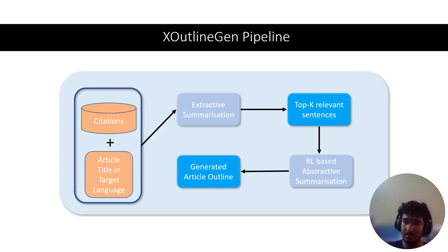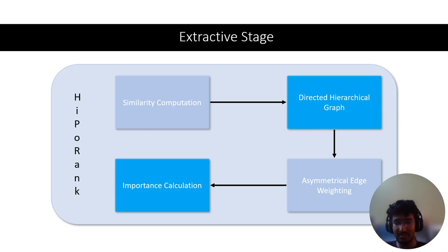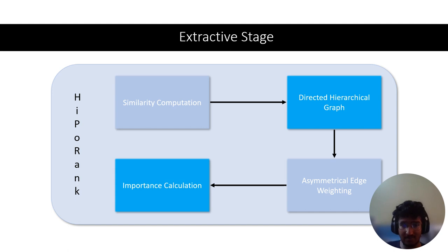We select the top key relevant sentences as extractive summarization and pass them to an abstractive summarization model with RL rewards. For the extractive stage, we use HippoRank, a neural unsupervised extractive summarization model. It creates a hierarchical graph with sentence-level nodes and section-level nodes. Sentence-level representations come from a standard encoder, and section-level representations are mean poolings of sentence-level representations. Connections between nodes are based on similarity computation using cosine similarity and asymmetrical edge weighting.